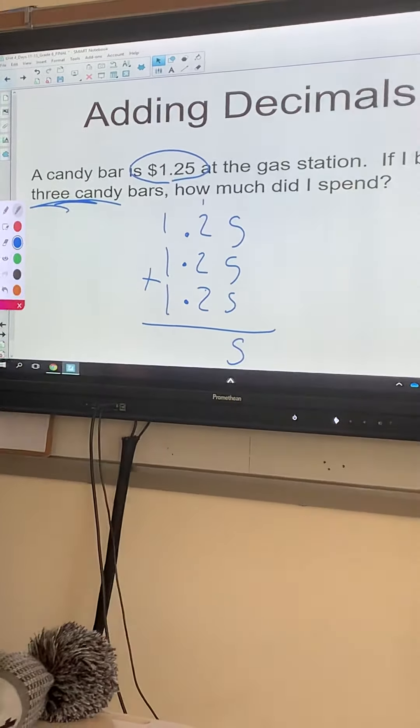When we get to the decimal, make sure you drop that down. And then 1 plus 1 plus 1 is 3. So $3.75 for those three candy bars.